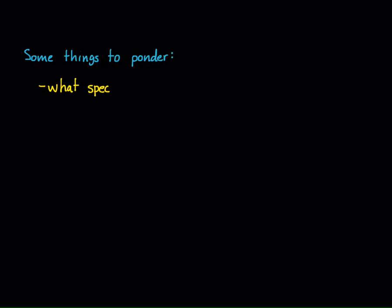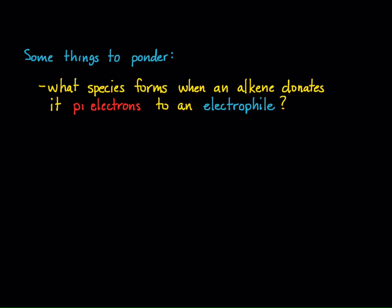The first being is, well, what species forms when an alkene donates its pi electrons to an electrophile? So, for the most part, we see the formation of a carbocation.